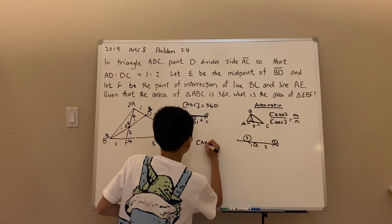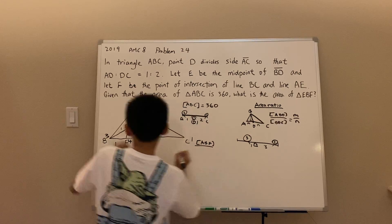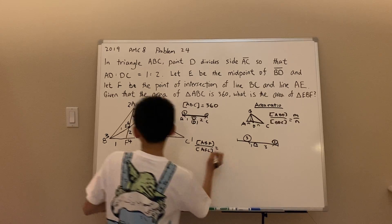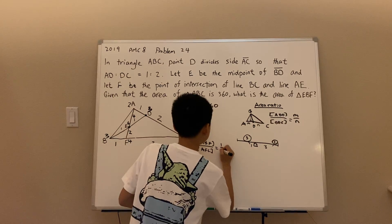So let's look at triangles ABF and AFC. Well, we know that the ratio of triangles ABF and AFC is simply one-third, the ratio of the bases.